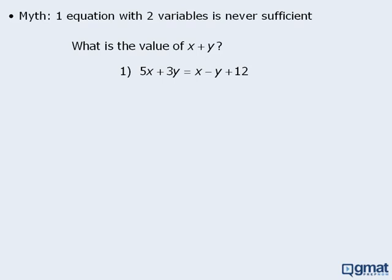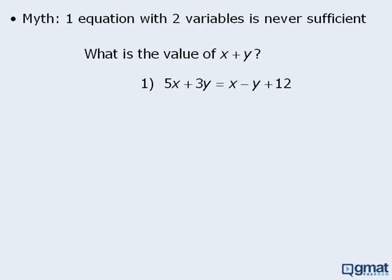Here's one last example involving one equation with two variables. In this question, we want to find the sum of x and y, which already makes this question different. The potential mistake would be to conclude that we must find the individual values of x and y. However, we are only required to find their sum. So if we take our equation and subtract x from both sides and add y to both sides, we get 4x plus 4y equals 12. Dividing both sides by 4 gives us x plus y equals 3. So the sum of x and y is 3, and statement 1 is sufficient.